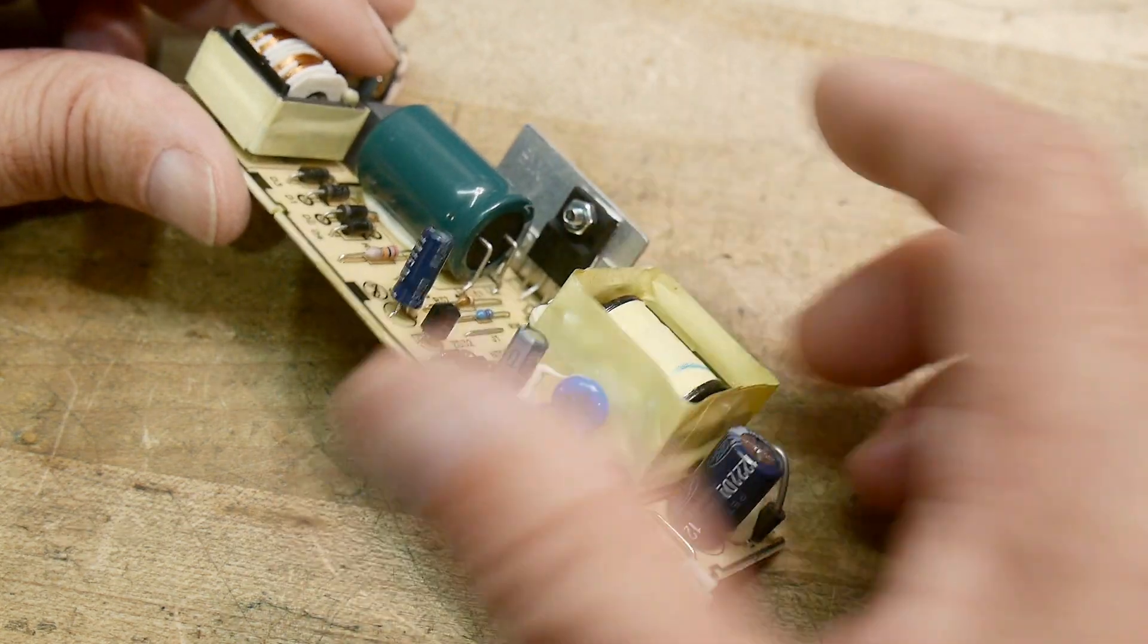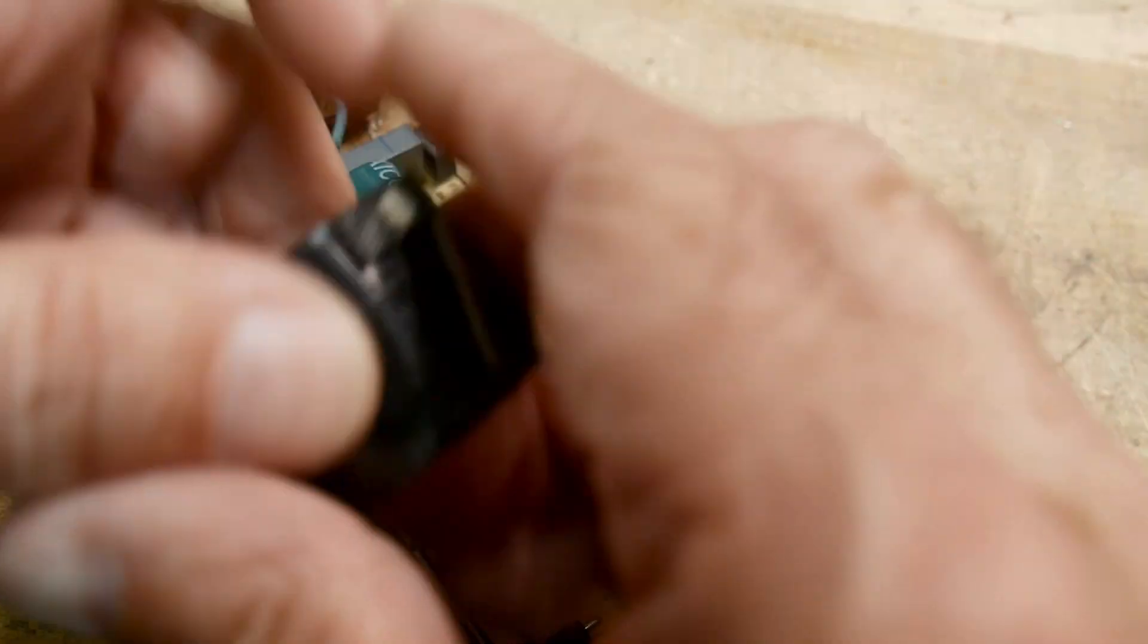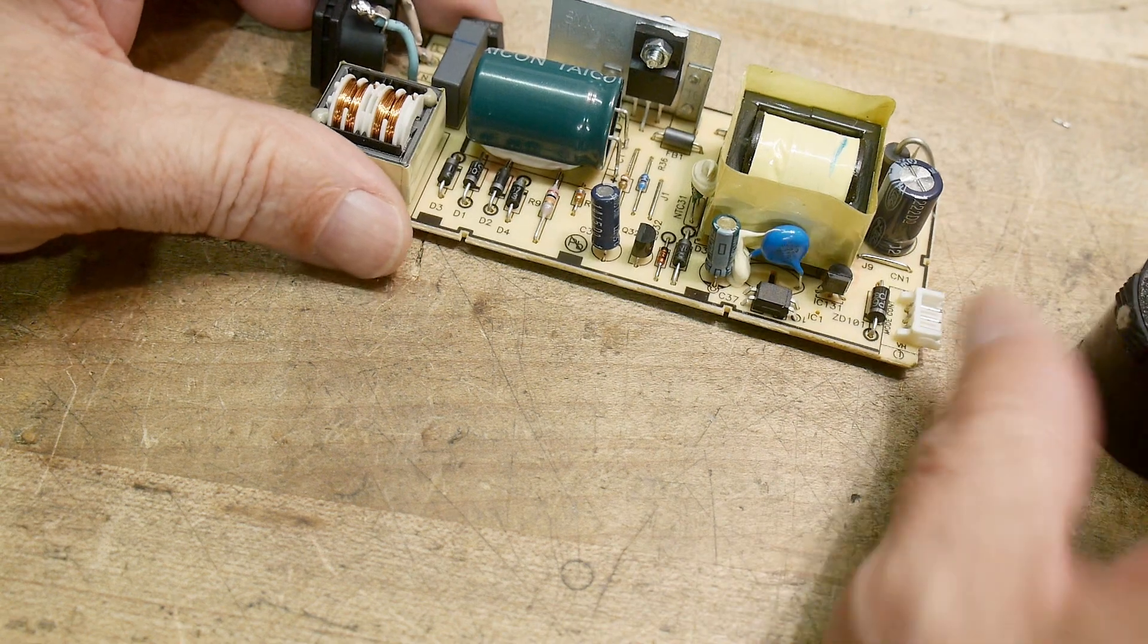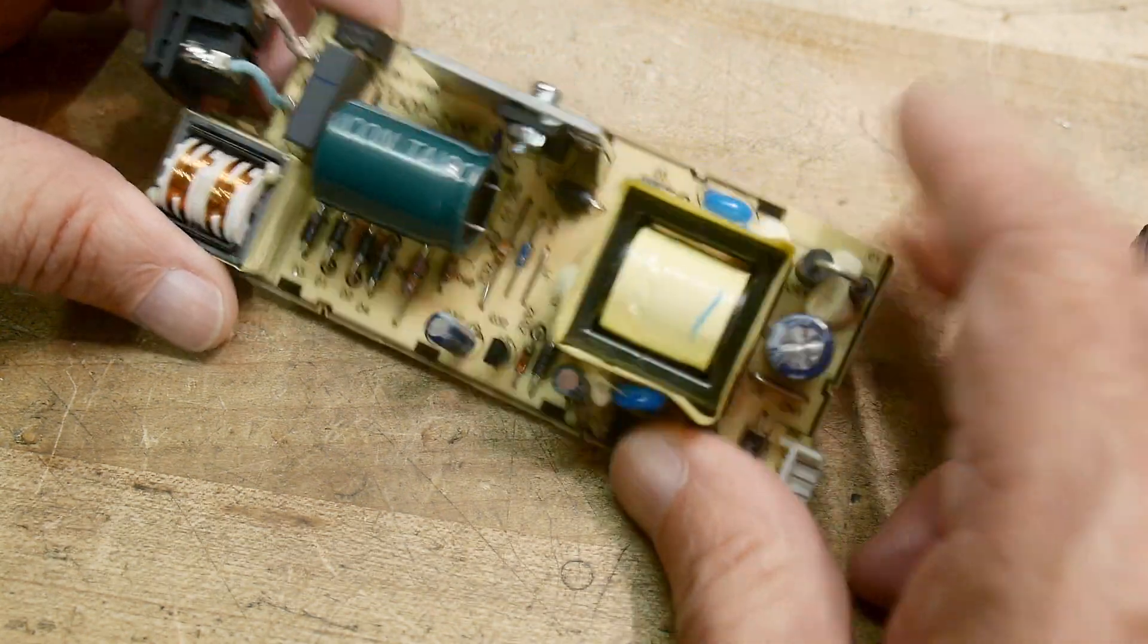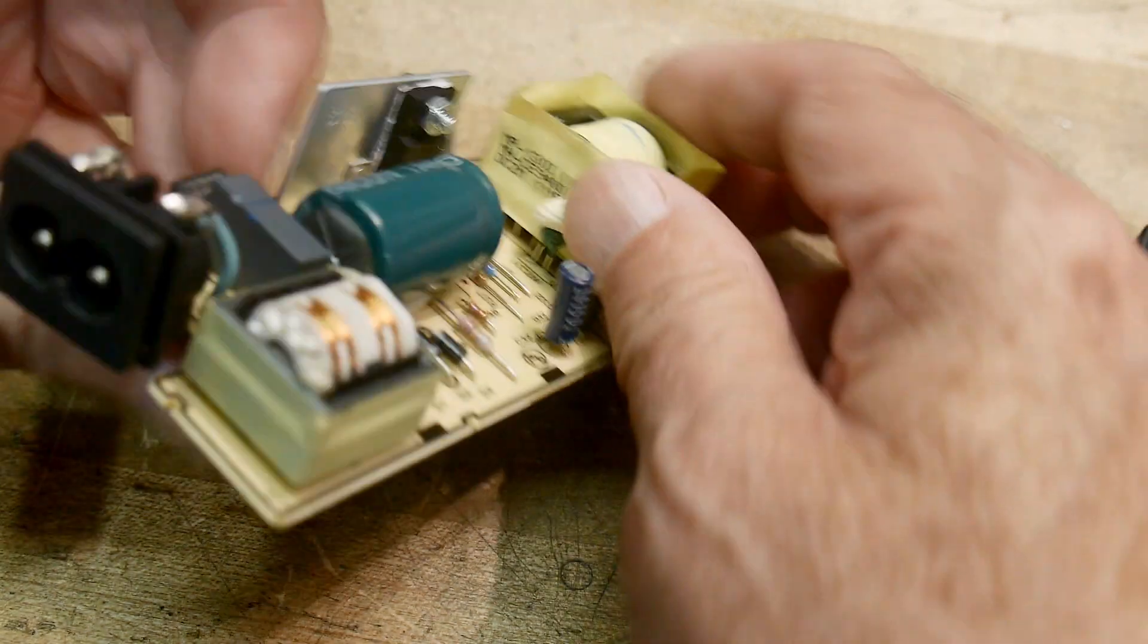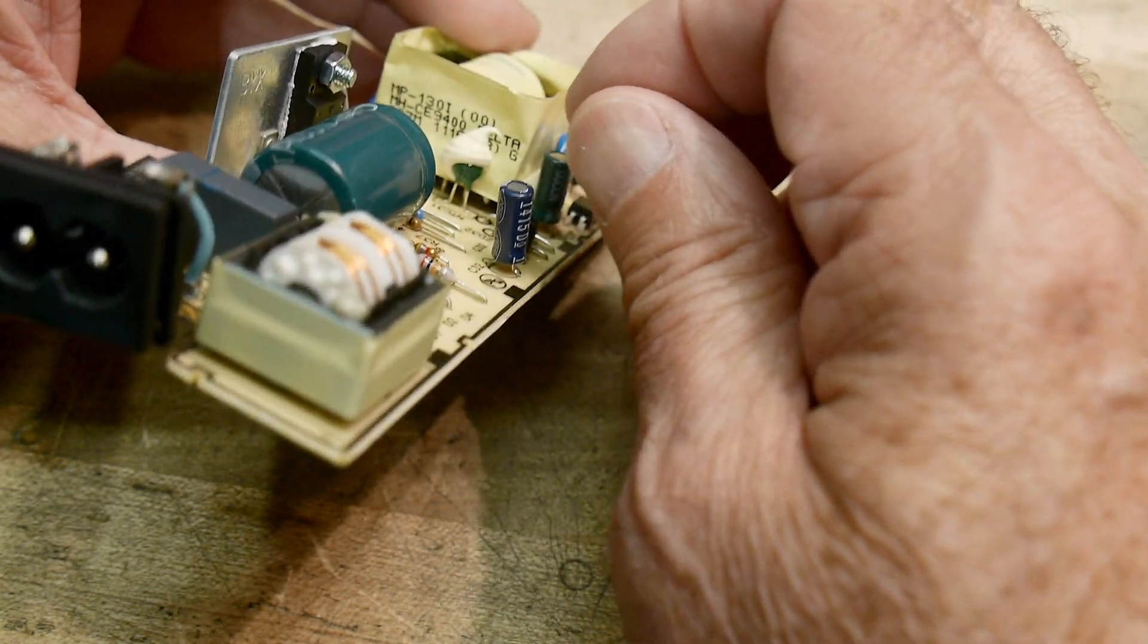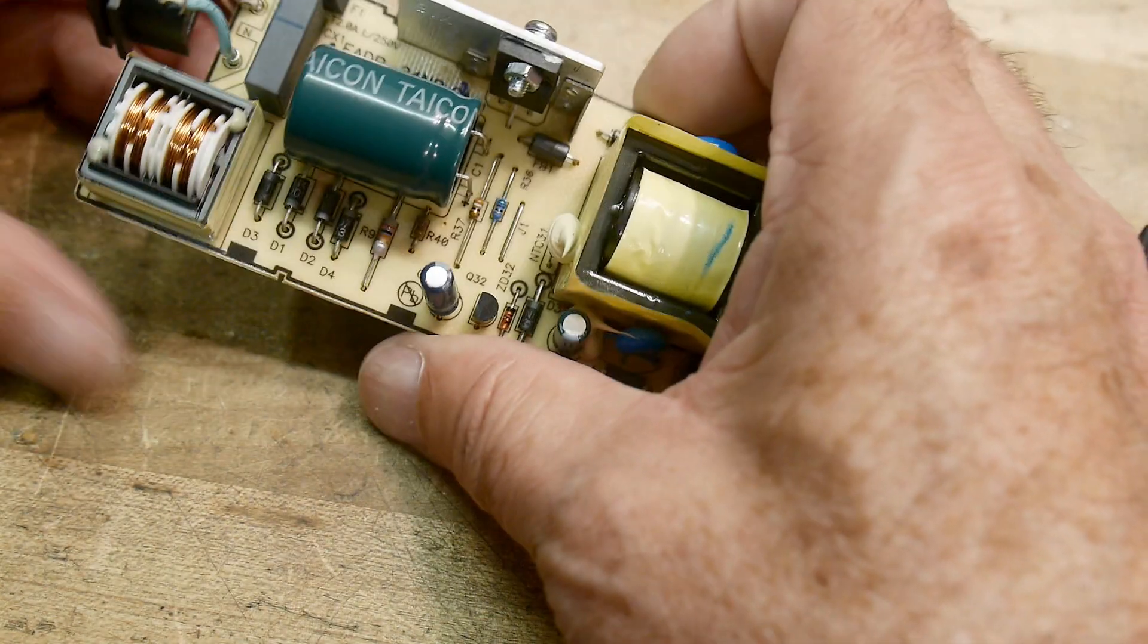So if you can read the part number on the FET here, that's a K3567 whatever that is, and any other markings on this thing. Here's some part numbers, it's not really telling me what's going on there.